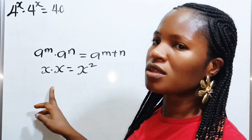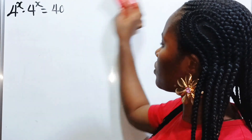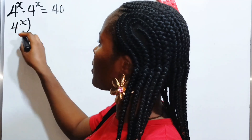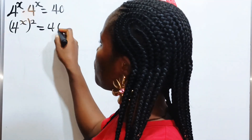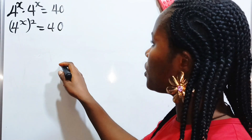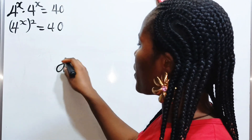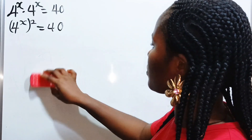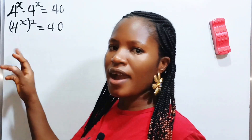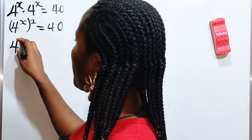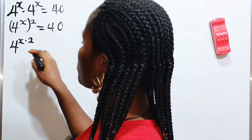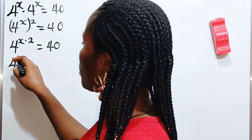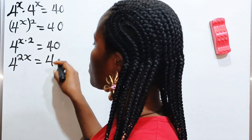So let's use the second law. This is the same thing as 4 to the power of x squared is equal to 40. Recall that a to the power of m raised to the power of n is equal to a to the power of m times n. So we can write this as 4 to the power of x multiplied by 2, which gives us 4 to the power of 2x is equal to 40.